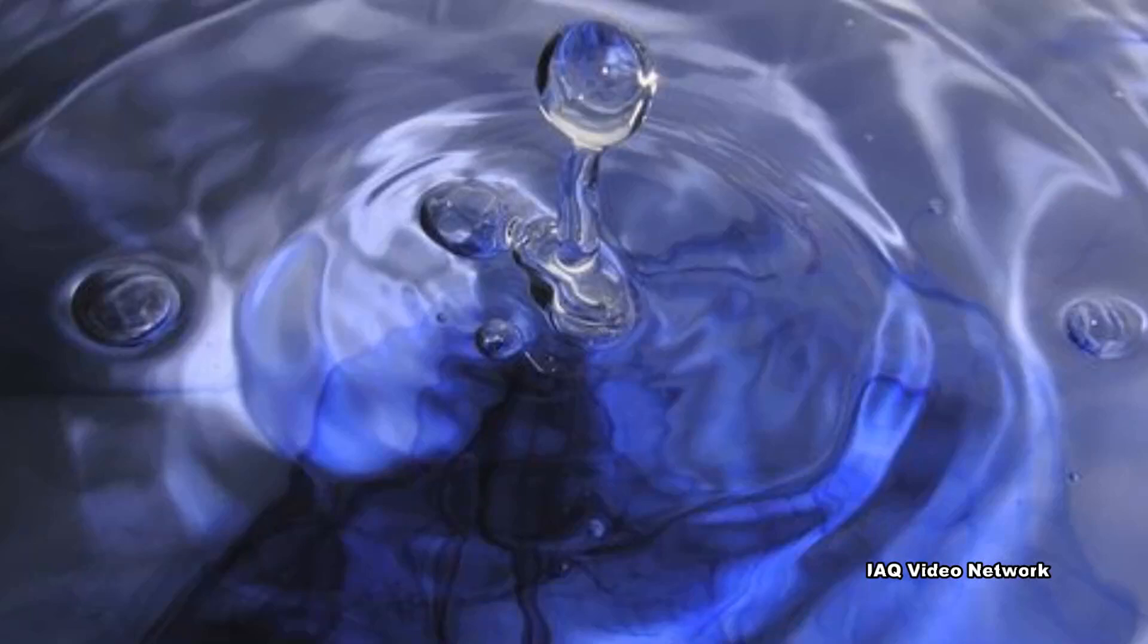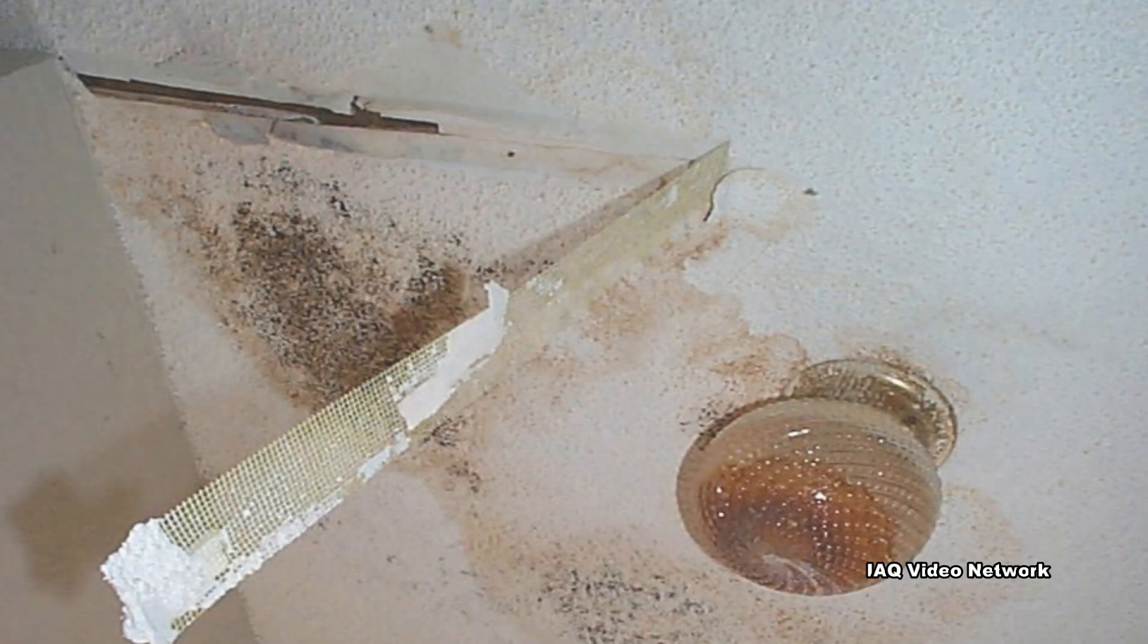This water will gradually make its way to the lowest area it can reach. This means a burst pipe on a second floor can cause water damage not only to that level of the property, but also to the floor below and the basement or crawl space.